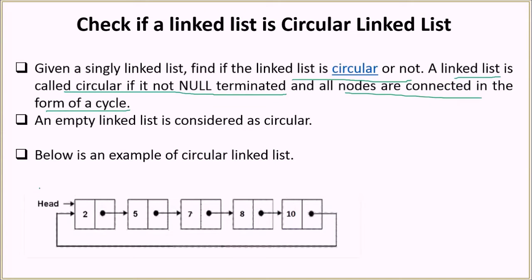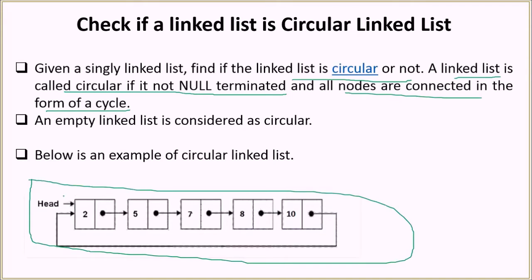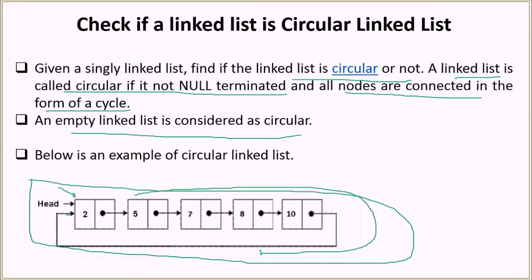We are looking at a structure where your head is pointing to a node and then you have a cyclic structure, which means the last node will point to the first node. There will be no pointer pointing to null, so it will not be null-terminated. Note that an empty linked list is also considered circular — if it doesn't have any nodes, we consider it a circular linked list.